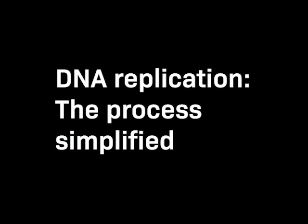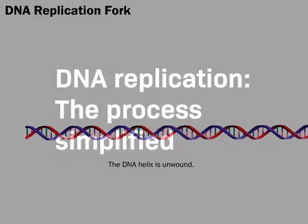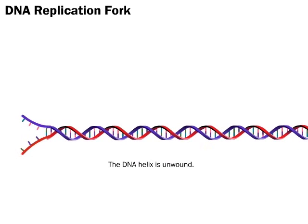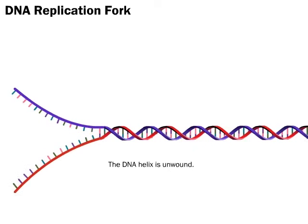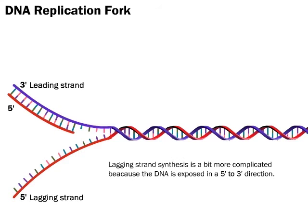DNA replication: the process simplified. The DNA helix is unwound, and in leading strand synthesis, DNA synthesis progresses in a five prime to three prime direction. Lagging strand synthesis is more complicated because the DNA is exposed in a five prime to three prime direction.